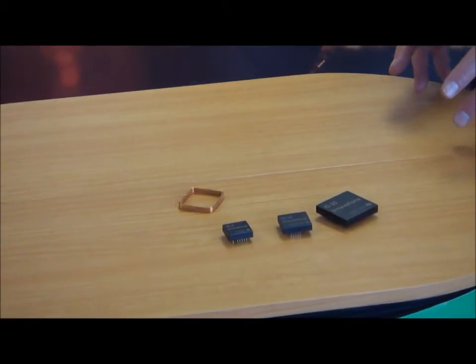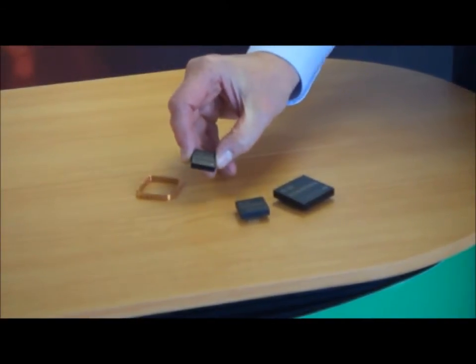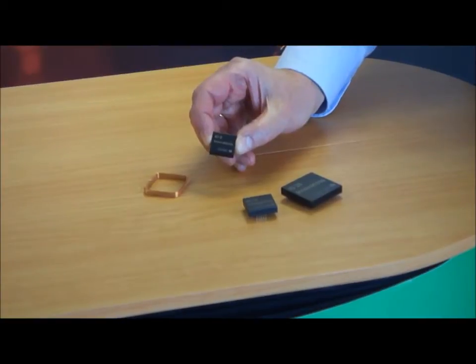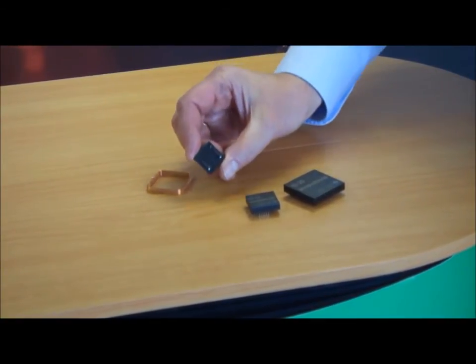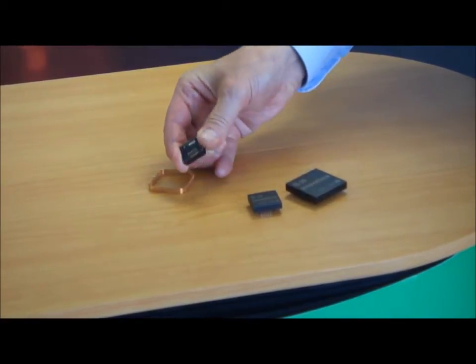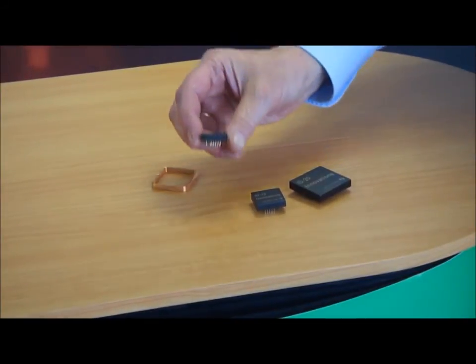So three variants here. The ID2 is the smallest, about an inch square with contacts on the back that wire up to an RS232 interface.